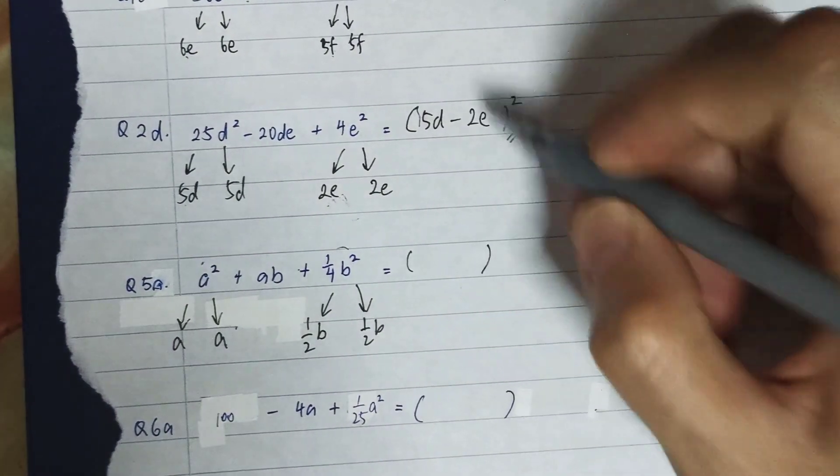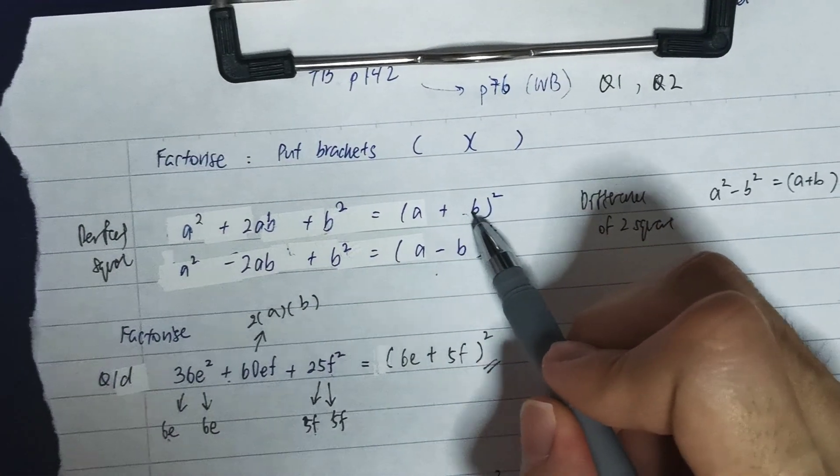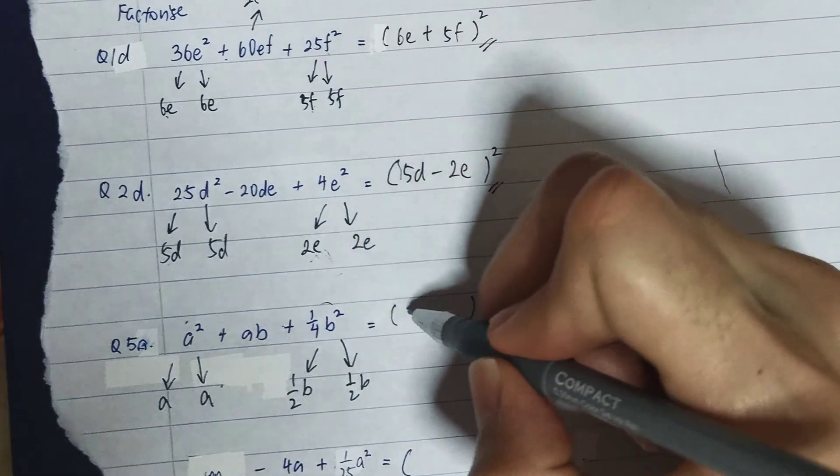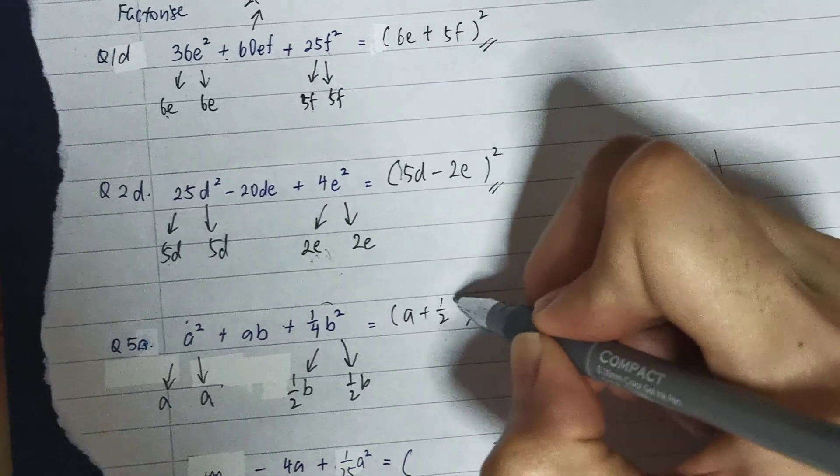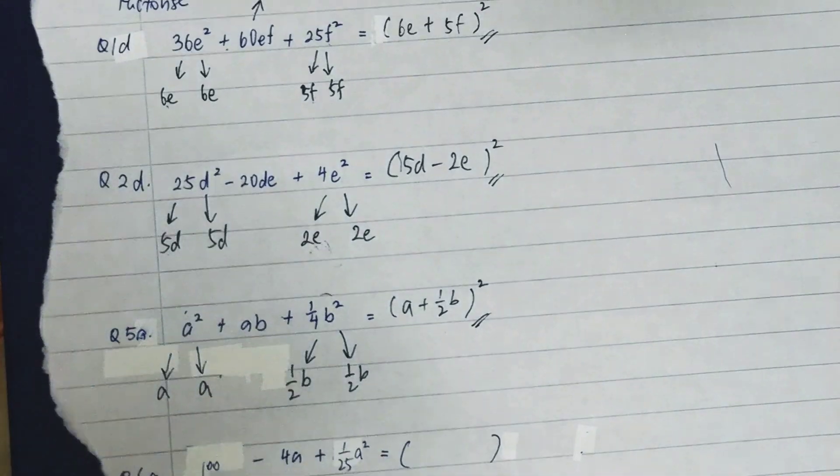That means this one will be the first one over here, (a + b)². So it's (a + ½b)². This one will be my factorized answer.